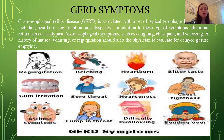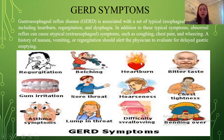A history of nausea, vomiting, or regurgitation should alert the physician to evaluate for delayed gastric emptying. To repeat all symptoms: regurgitation, belching, heartburn, bitter taste, gum irritation, sore throat, chest tightness, asthma symptoms, lump in throat, difficulty swallowing, and bending discomfort.